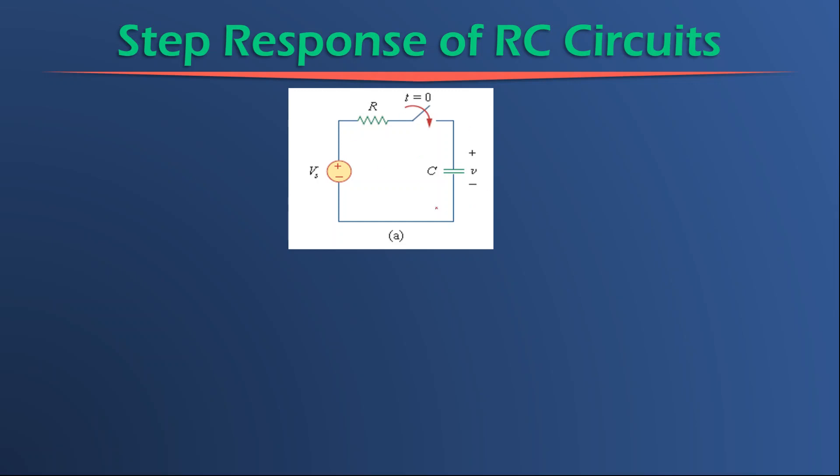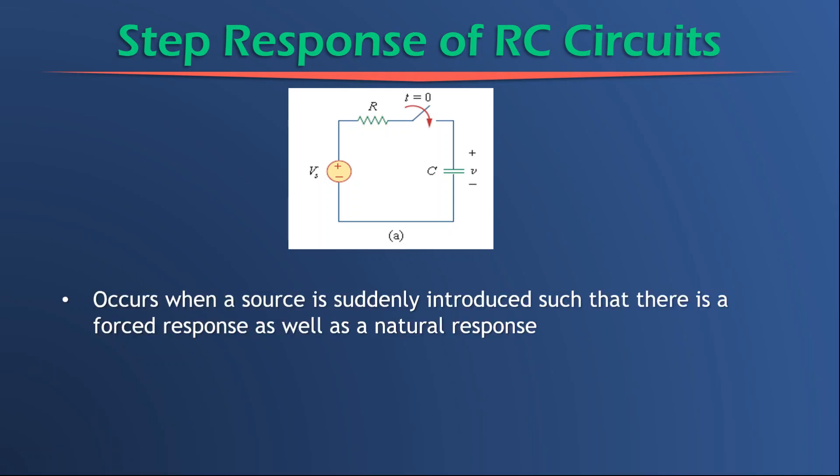So this is definitely a first order differential circuit, but it also has a source that is then connected to it, which is what defines the term step response. It occurs when a source is suddenly introduced such that there is a forced response as well as a natural response in the circuit. So a source is present when T is greater than or equal to zero. The change is actually introducing the source and there will be a forced response. The forced response is the response coming from the source and the natural response is the natural response of the capacitor if the source would have not been there.